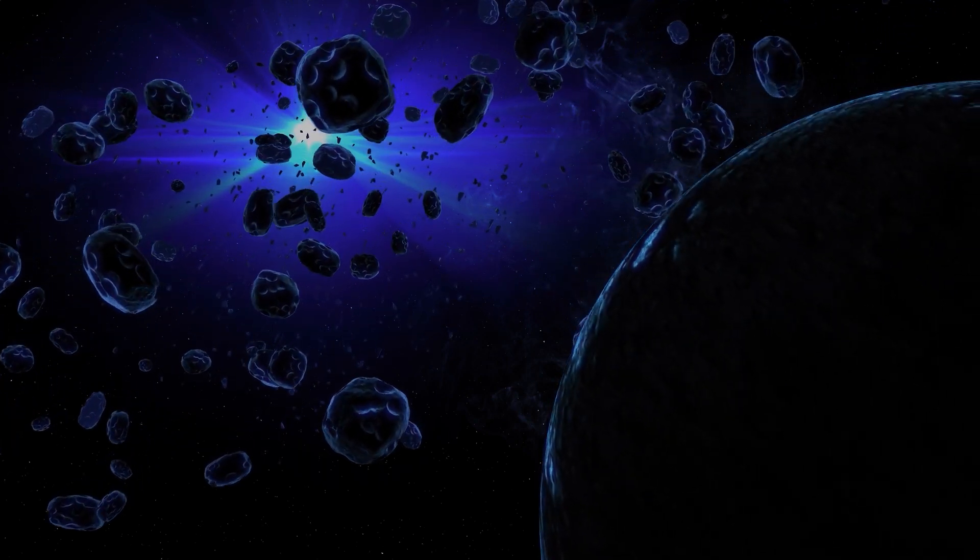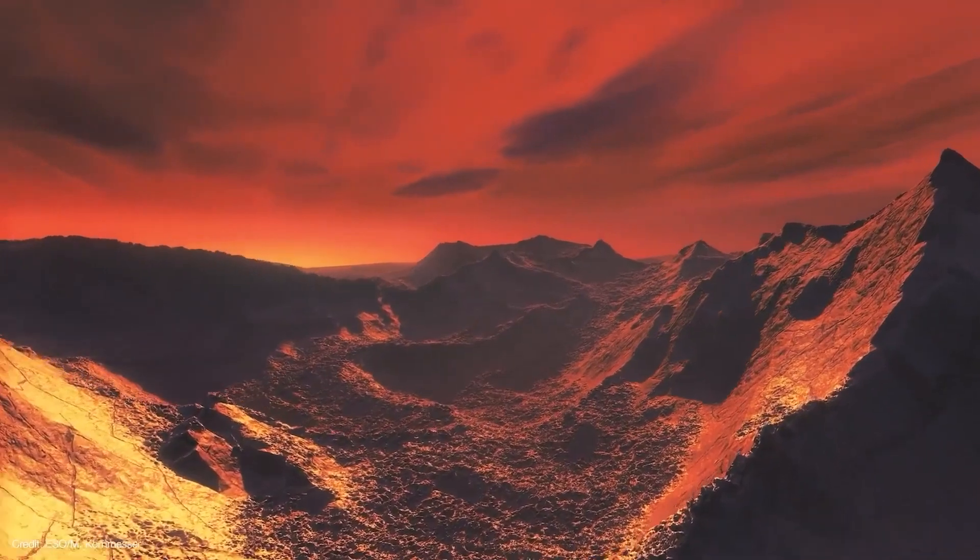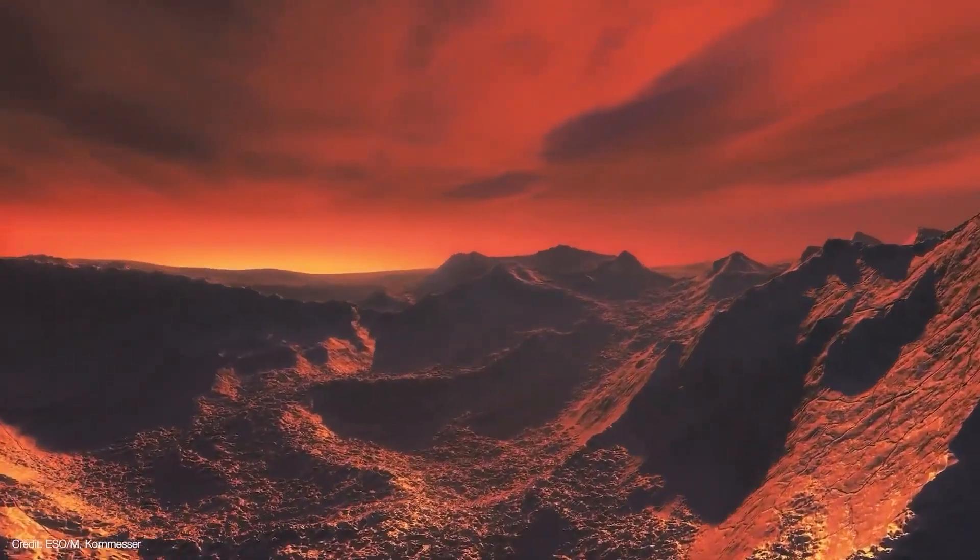According to Loeb, a rocky planet like Proxima b would absorb light from its star and re-emit it as infrared light if it had an atmosphere.